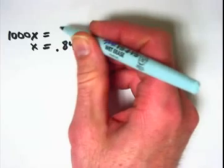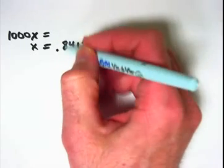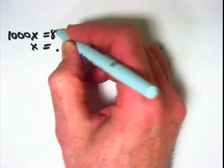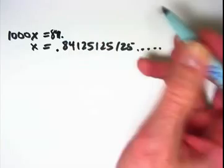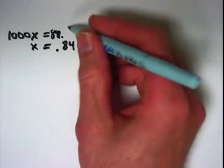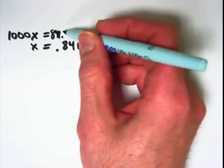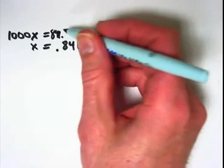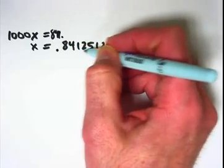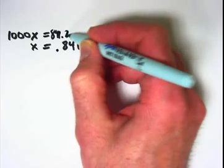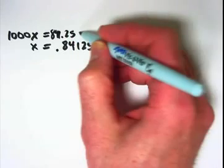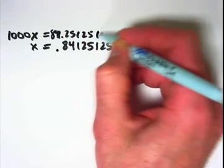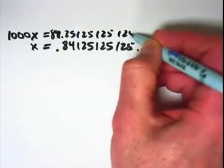I move the decimal place to the left three spots, and I'm going to squish the 841 in here like that. That's supposed to be an 841. This decimal, I'm trying to line it up as best as I can here. And then I continue with everything else. Two, five, one, two, five, one, two, five, one, two, five.